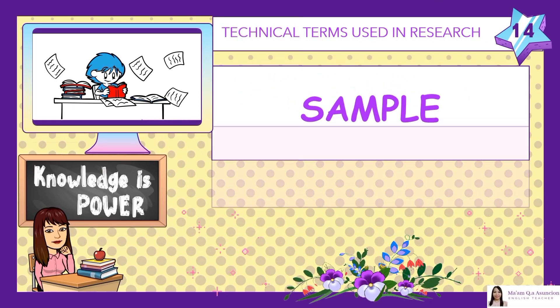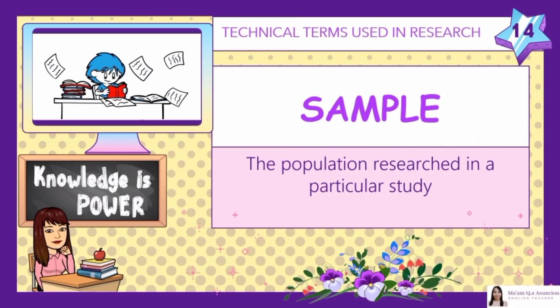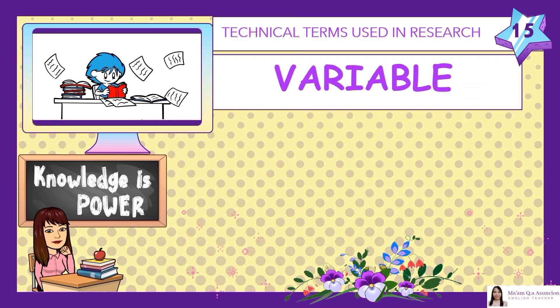Number 14: Sample. The population researched in a particular study. A sample refers to a smaller, manageable version of a larger group. It is a subset containing the characteristics of a larger population. Samples are used in statistical testing when population sizes are too large for the test to include all possible members or observations. A sample should represent the population as a whole and not reflect any bias toward a specific attribute.